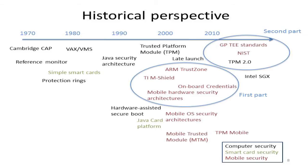Before discussing trusted execution environments in detail, let me put this in historical context. Computer scientists often forget about the past, and there's a risk that might happen for mobile platform security too. Most researchers working on smartphone security treat the world as starting in 2007 or 2008. But the concepts and techniques used in mobile platform security borrow from ideas that originated 30 years back — going back to the Cambridge CAP machine — and even today platform security architectures borrow concepts from those days.